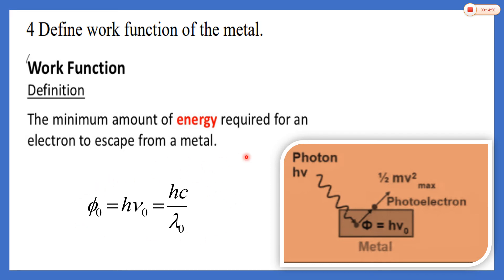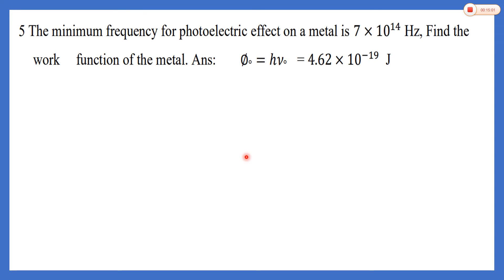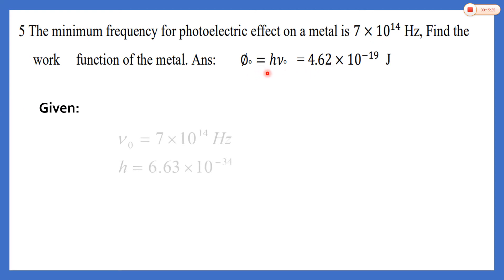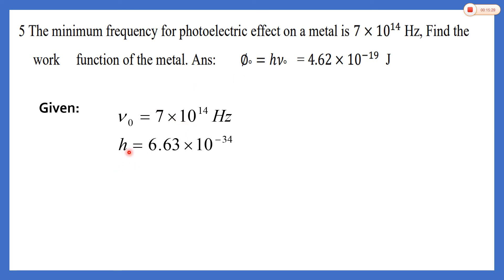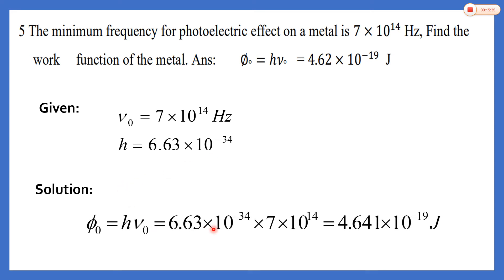Problem on work function: the minimum frequency for the photoelectric effect on a metal is given — find the work function of the metal. Given: nu-zero (threshold frequency) and h (Planck's constant, 6.63 × 10⁻³⁴ J·s). Using phi equals h times nu-zero, multiply h by nu-zero and you get the answer: work function is 4.641 × 10⁻¹⁹ joules. Next problem: find the kinetic energy of the emitted electron if the energy of the incident photon is 4 eV and the work function is 2.4 eV. Using Einstein's equation: kinetic energy equals h-nu minus phi-zero equals 4 minus 2.4 equals 1.6 electron volts.